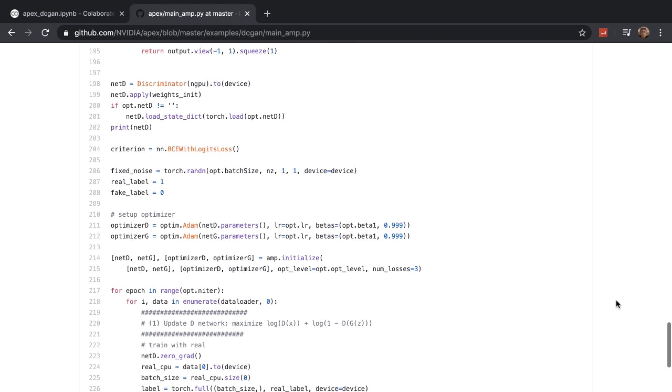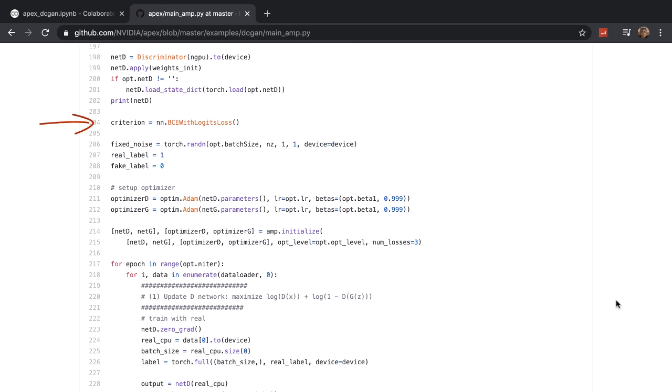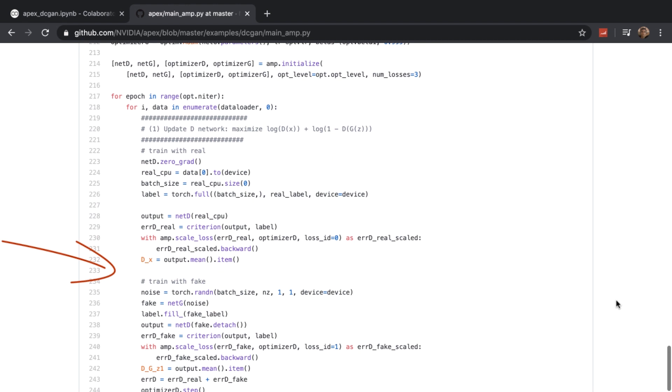And this is followed by setting up the binary cross entropy loss with logits, and setting up the optimizers for the networks. That is, this defines how the networks will learn. We have a for loop for the actual training phase over a number of epochs.